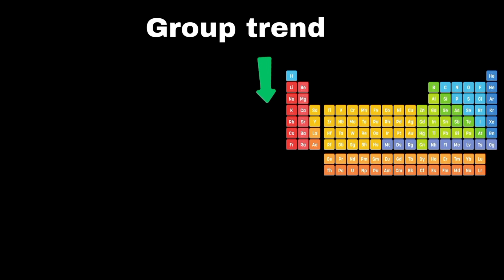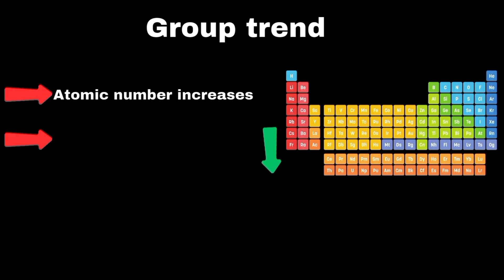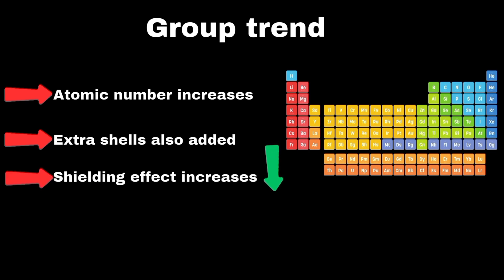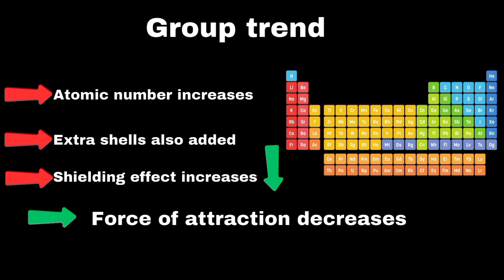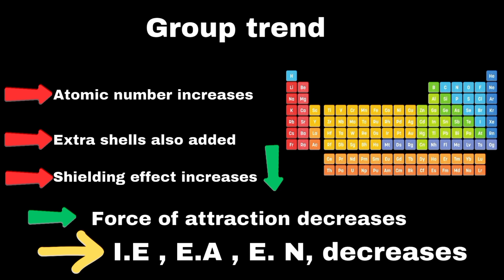First, let's start with group trend. As we move from top to bottom in group, atomic number goes on increasing. Extra shells are also being added, and shielding effect also increases. Due to these factors, force of attraction between nucleus and outermost electron decreases, and hence values of ionization energy, electron affinity, and electronegativity decrease from top to bottom in group.